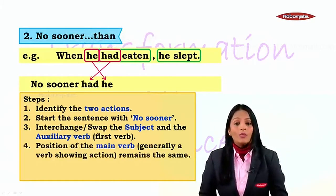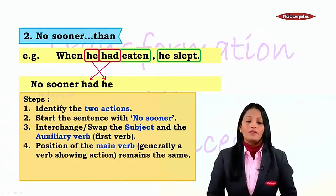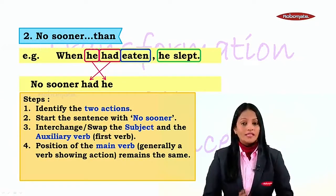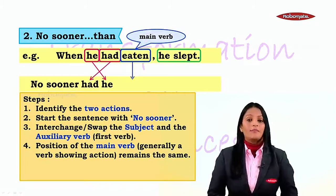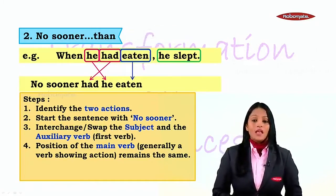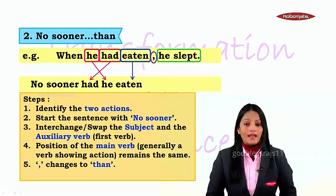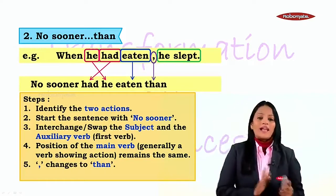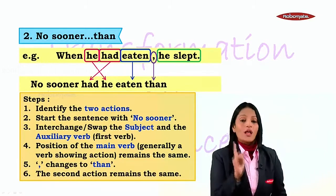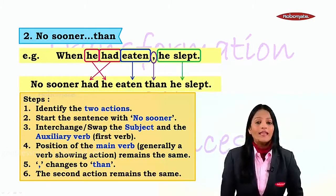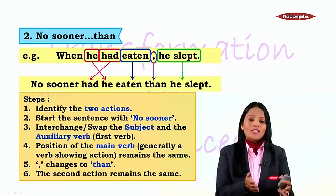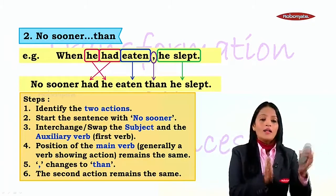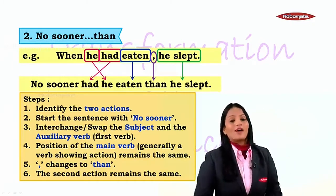Next, the main verb remains as it is — wherever 'eaten' is, 'eaten' will come as it is. Then the comma changes to 'than.' Remember the 'than' there, students. So that comma changes to 'than.' And the second action remains as it is — you don't have to make any changes to the second action. All the changes take place before the comma, and of course the comma changes to 'than.' After the comma, everything is written as it is. That is how simple it is, students.